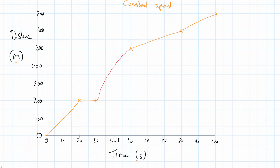With acceleration and deceleration, you can't use speed equals distance over time directly to find the speed at a specific point — that would only give you average speed. To find the actual speed at a point on a curve, you draw a tangent at that point. For example, at 40 seconds you draw a tangent, giving a straight line whose gradient equals the speed at exactly that point on the curve.